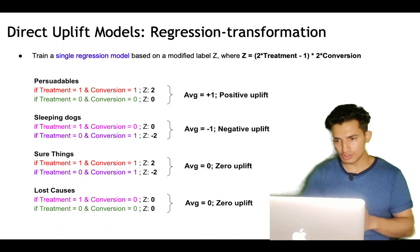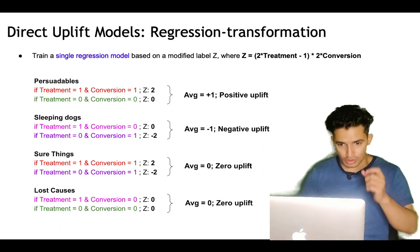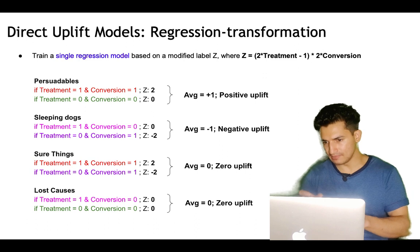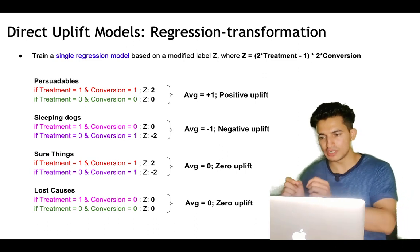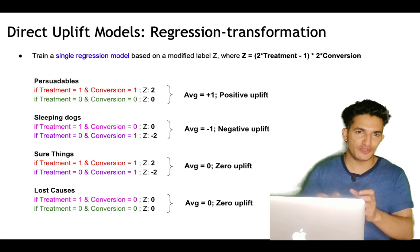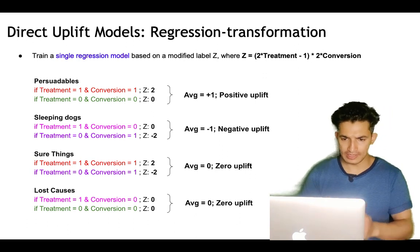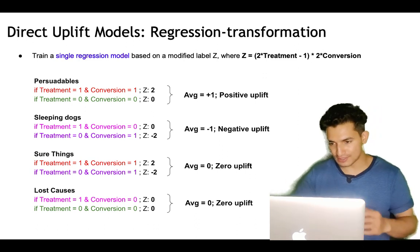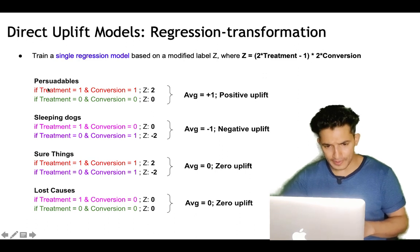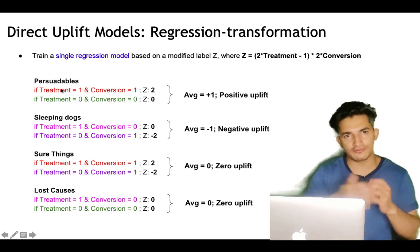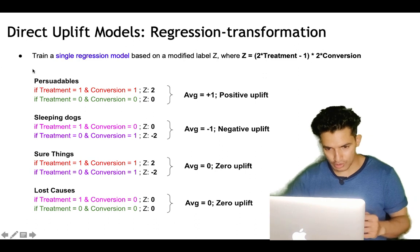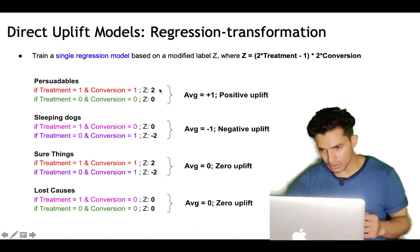Next is direct uplift modeling through regression transformation. We train a single regression model based on a modified label Z, where Z = (2 × treatment − 1) × (2 × conversion). Using this formula to transform the target variable, the regression model will directly give us the uplift. For persuadables: if treatment=1 and conversion=1, applying the formula gives Z=2; if treatment=0 and conversion=0, Z=0.